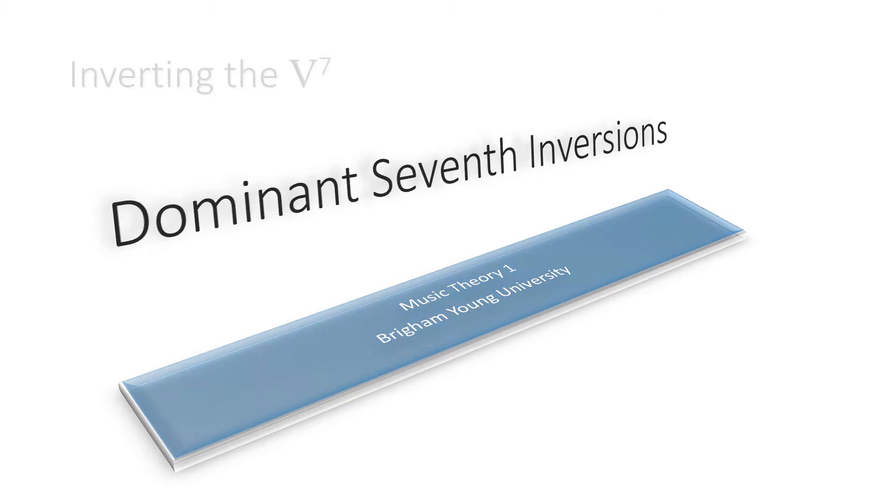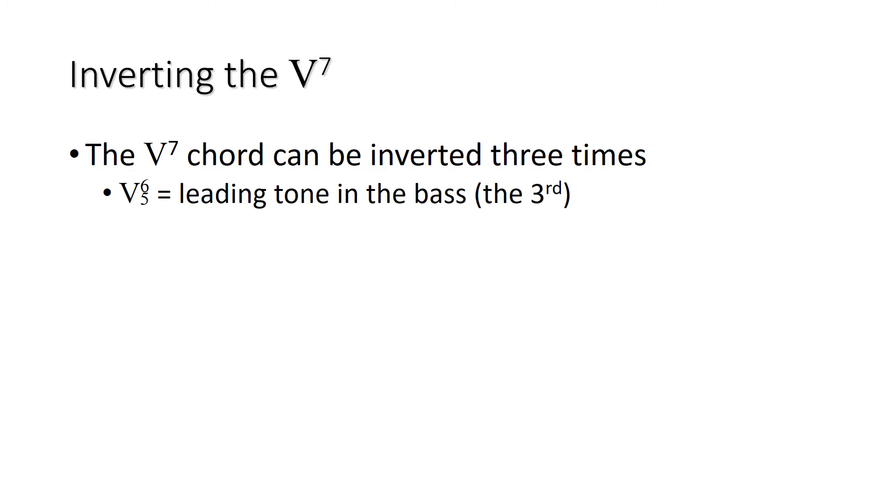Okay, let's get started. We're going to invert the V7 chord. There are, of course, three possible inversions for V7. The V6/5 would have the leading tone in the bass, which is the third of the chord.